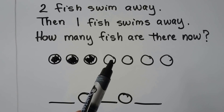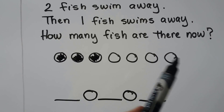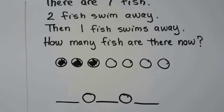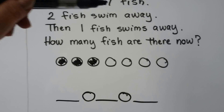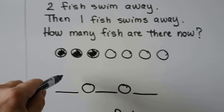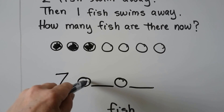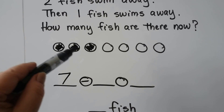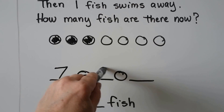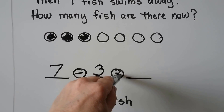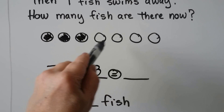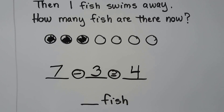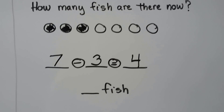How many did we not color? One, two, three, four. We can write our subtraction sentence. We write the number in all — seven — minus three is equal to four. How many fish are there now? Four fish.